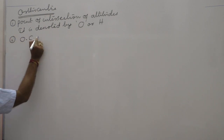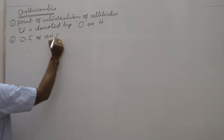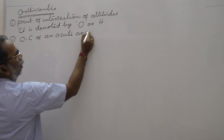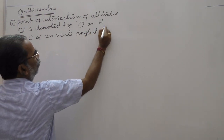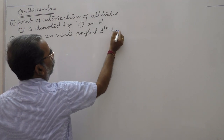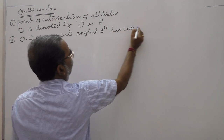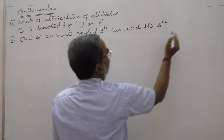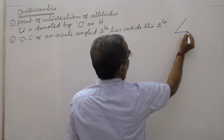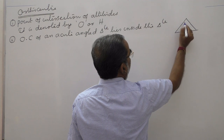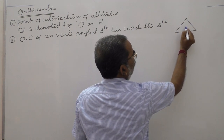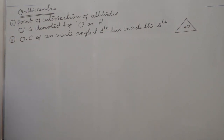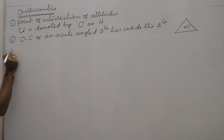The orthocenter of an acute-angled triangle — a triangle in which all three angles are less than 90 degrees — lies inside the triangle.